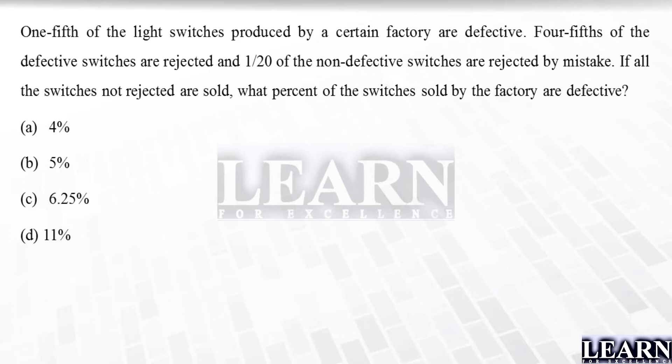Let's have a look at the question. We're told one-fifth of the light switches produced by a certain company are defective. Four-fifths of the defective switches are rejected, and one by twenty of the non-defective switches are rejected by mistake. If all the switches not rejected are sold, what percentage of the switches sold by the factory are defective?